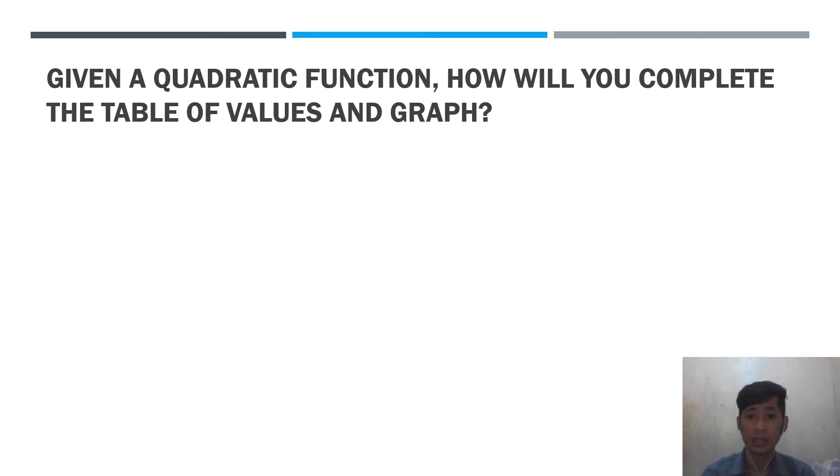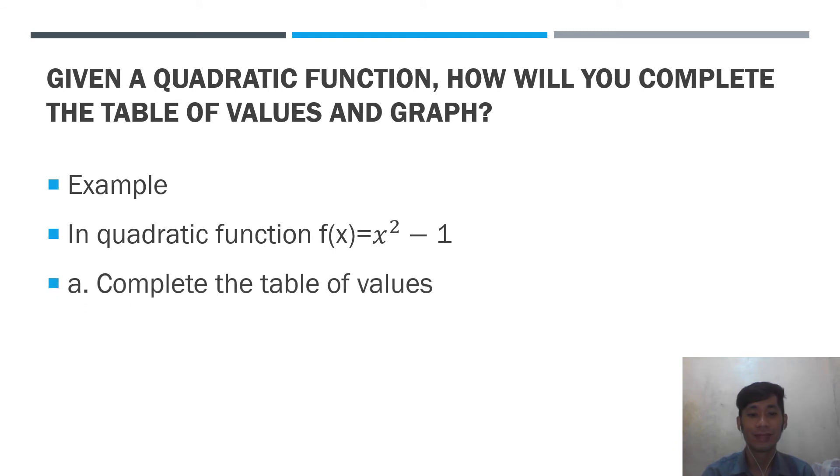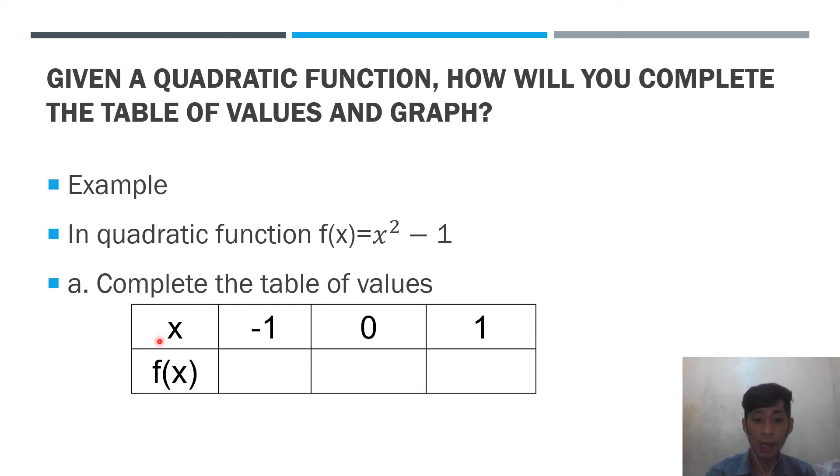Given a quadratic function, how will you complete the table of values in graph? Let us have an example. In quadratic function, f(x) = x² - 1. So this is the table of values. So dito po, kayo na po ang mag-designate ng value ng x. So ang nga hanapin na lang natin is yung f(x) natin o yung y. By the way, uulitin ko po ulit, ang f(x) po ay equivalent sa y. Parehas lamang po ang f(x) at yung y. So huwag pong malilito. Parehas lamang po sila.